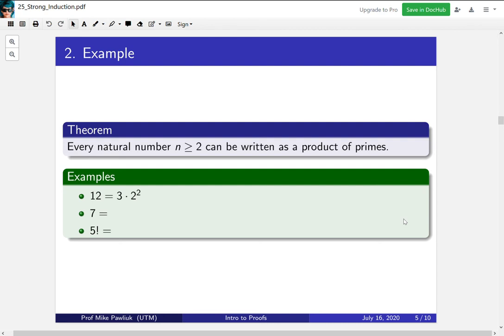So 12 we can write as 3 times 2 times 2. 7 there's nothing to do, it's already prime, so we can write it as a product of 1 prime. And 5 factorial we can write as 5 times 4 times 3 times 2, but the 4 can be broken down even further, so we get this.